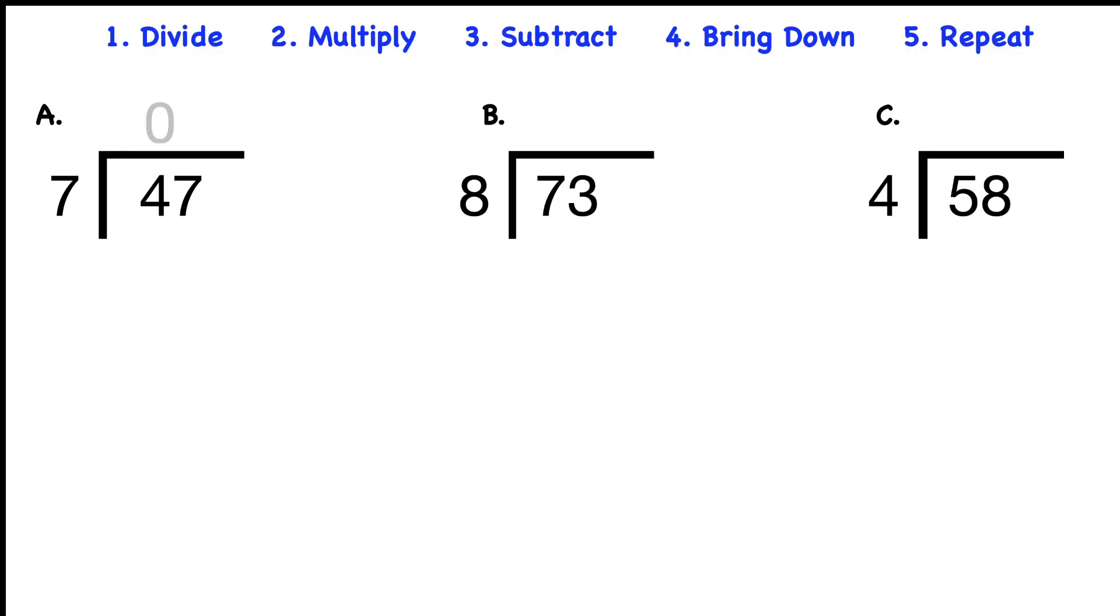Our first problem, A, is 47 divided by seven. Seven goes into four zero times, but seven can go into 47 six times. Seven times six is 42. We subtract the 42 and we get five. The five is our remainder. So our answer is six with a remainder of five.